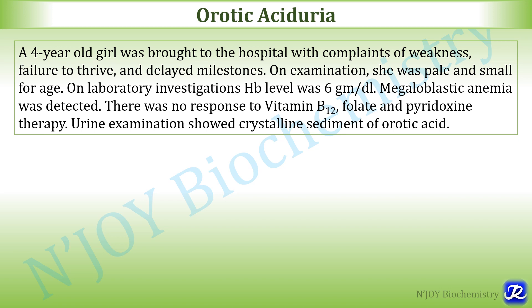A 4-year-old girl was brought to the hospital with complaints of weakness, failure to thrive, and delayed milestones. On examination, she was pale and small for age. On laboratory investigation, hemoglobin level was 6 gram percent. Megaloblastic anemia was detected. There was no response to vitamin B12, folate, and pyridoxine therapy. Urine examination showed crystalline sediment of orotic acid.